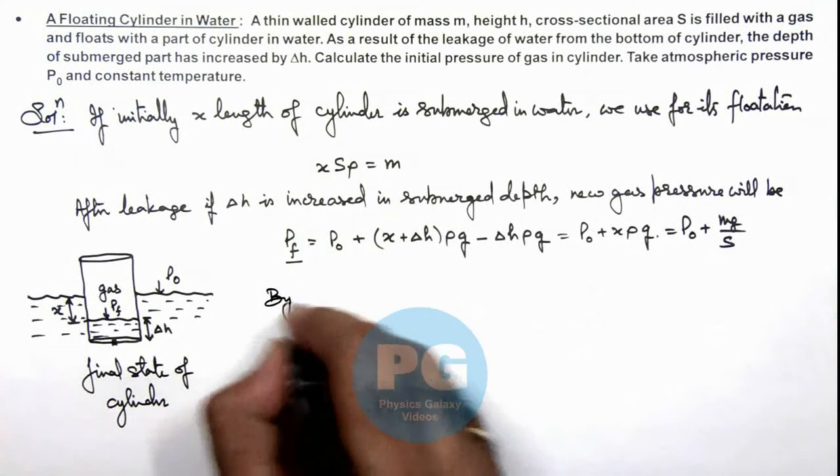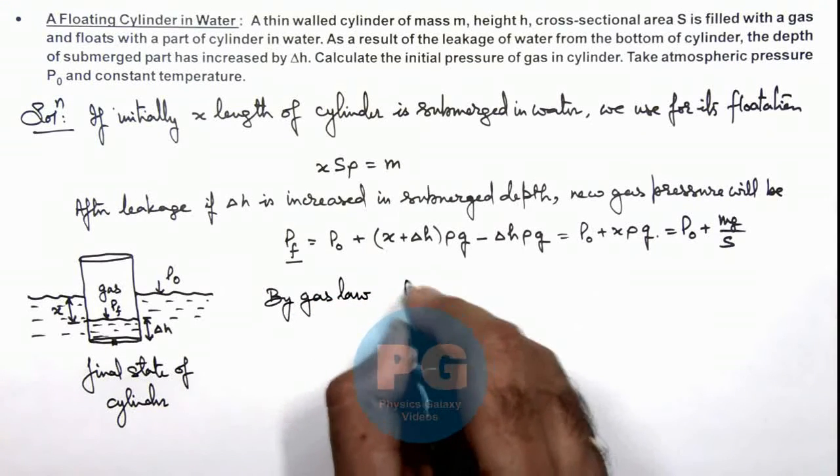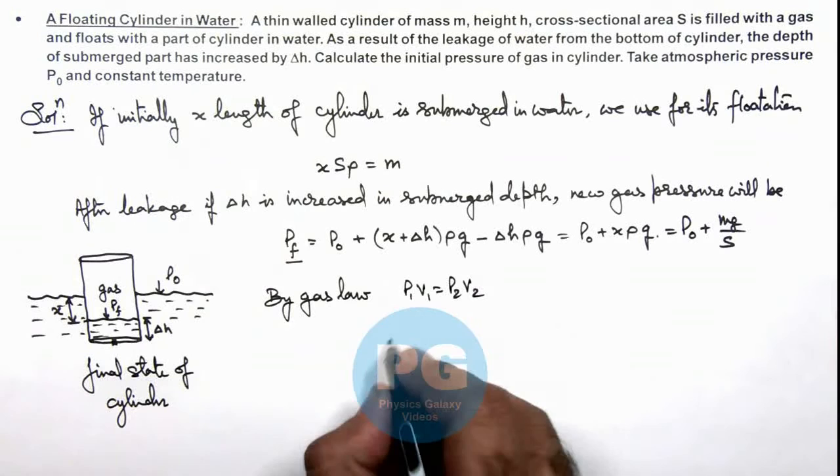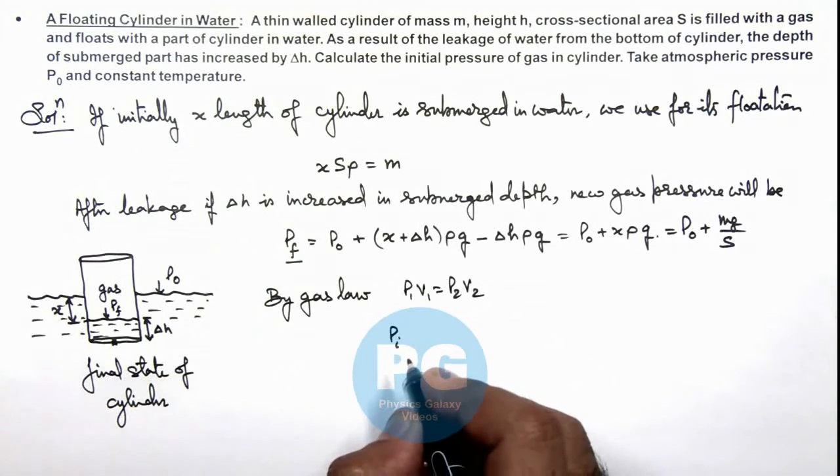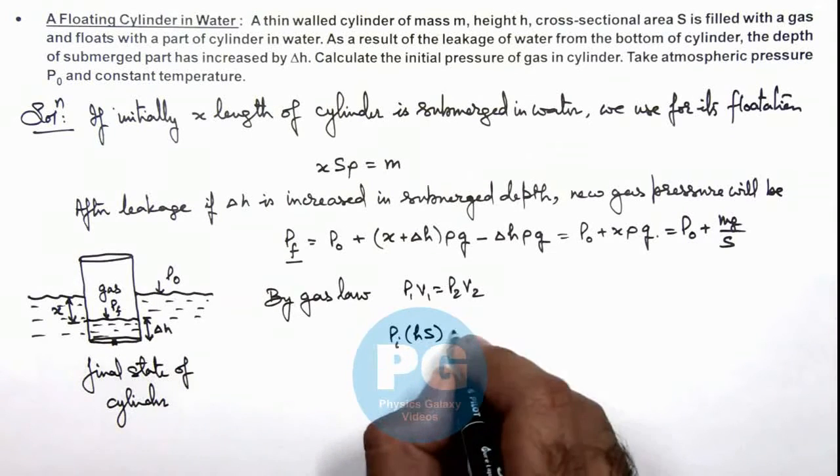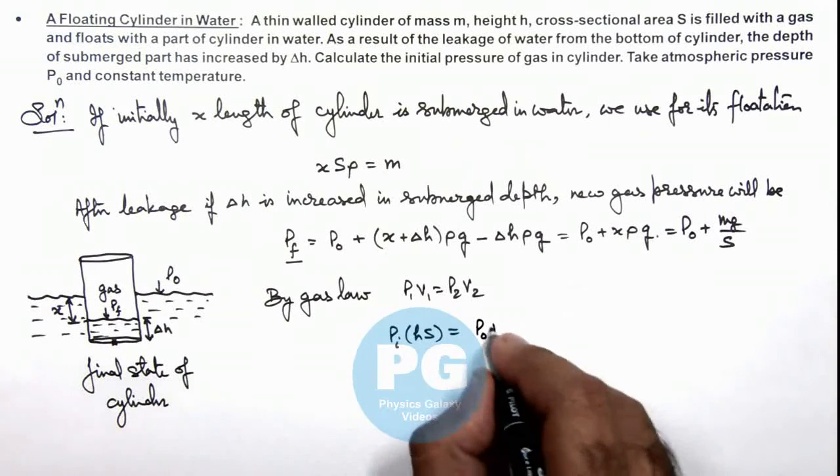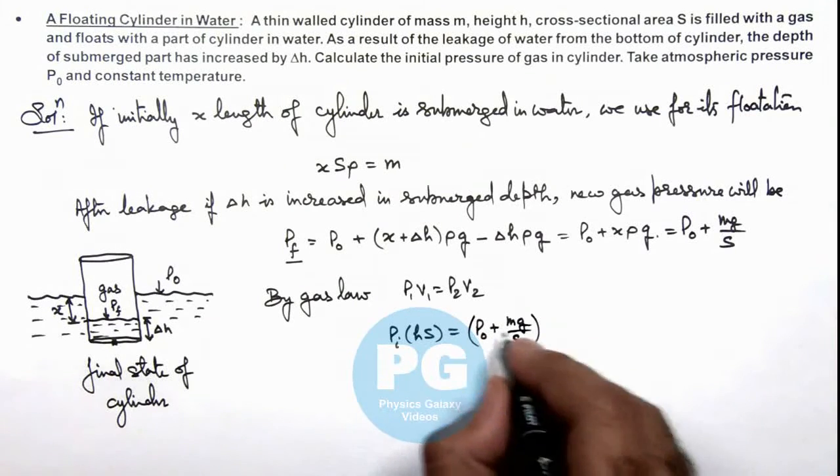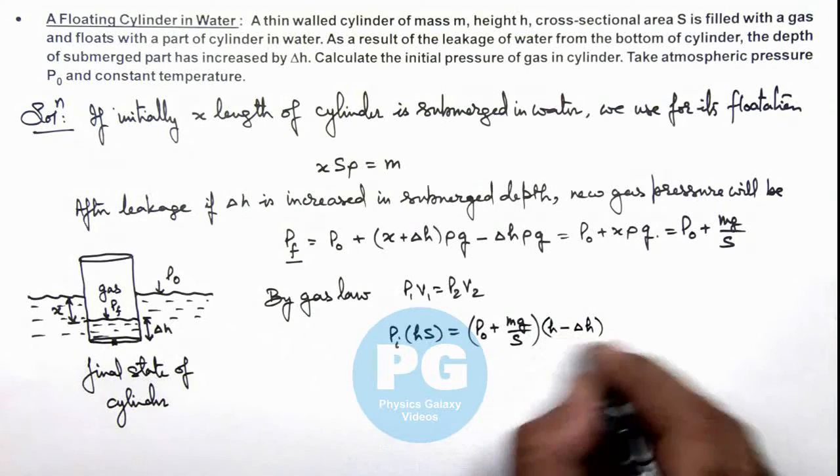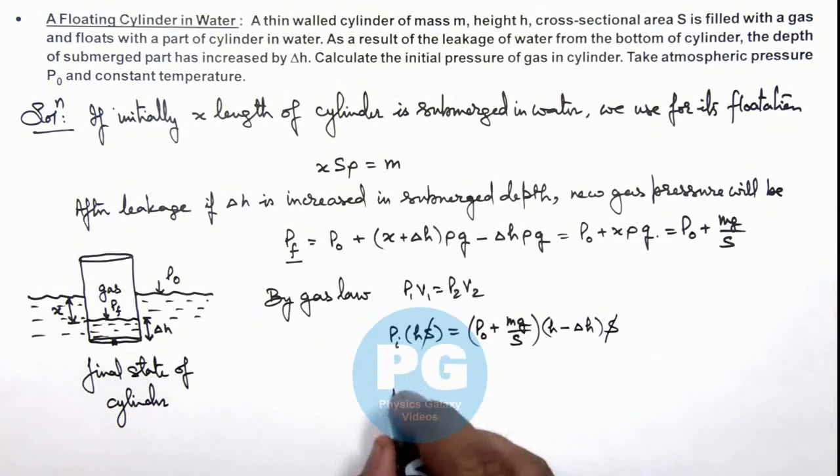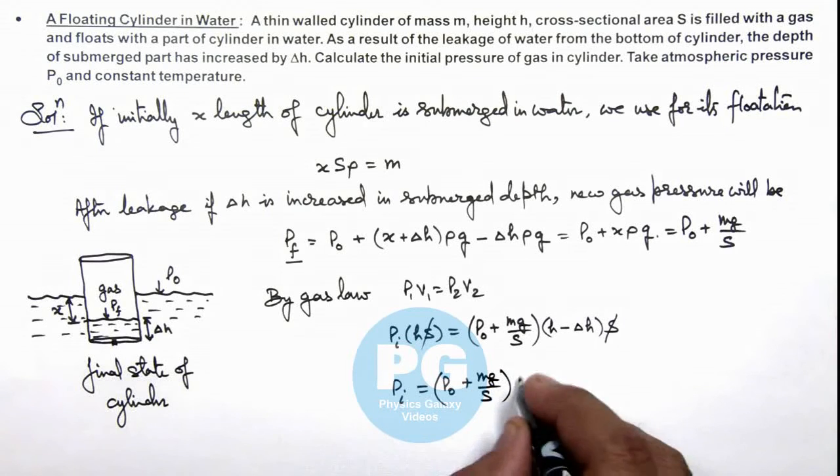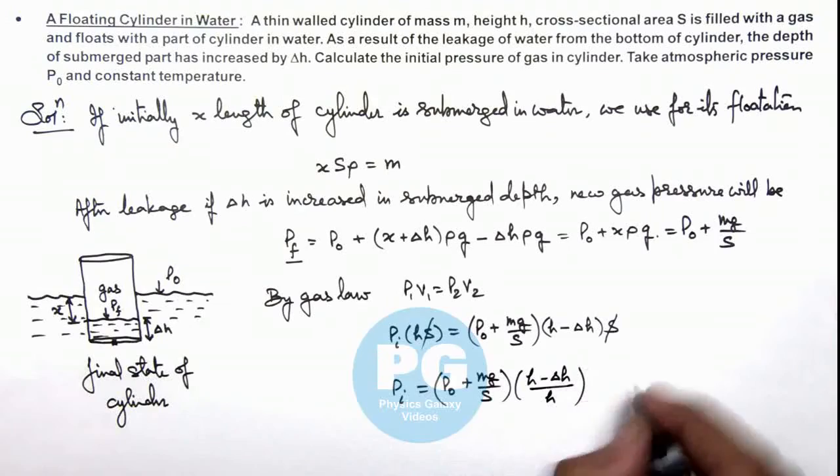Now by gas law we can use P₁V₁ equals P₂V₂ as we are given that temperature is constant. So initially pressure was Pᵢ and the volume was, if length of whole cylinder is h, its volume initially to which the gas was filled was h·S. Finally the pressure is P₀ plus m·g/S times (h - Δh)·S. Here S gets cancelled out and the value of initial pressure we get is P₀ plus m·g/S multiplied by (h - Δh)/h. This is the final result of this problem.